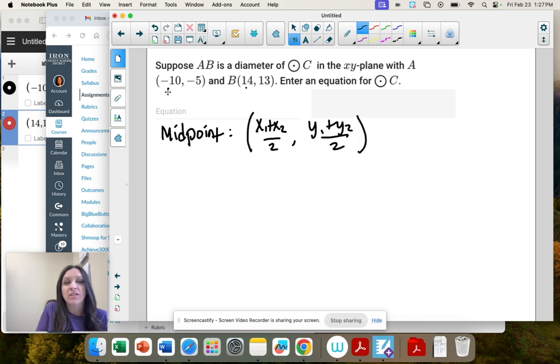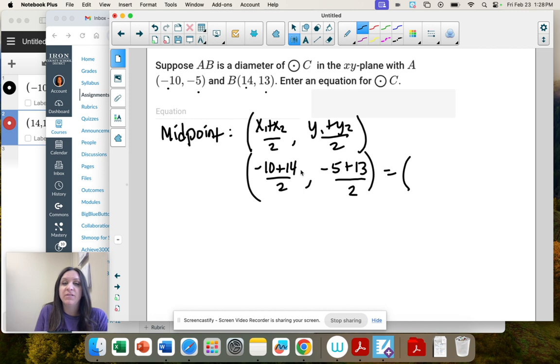So x1, x2, that's negative 10 plus 14, divided by 2. y1 plus y2, divided by 2. So we get negative 10 plus 14 is 4. 4 over 2 is 2. Negative 5 plus 13 is 8. 8 over 2 is 4.